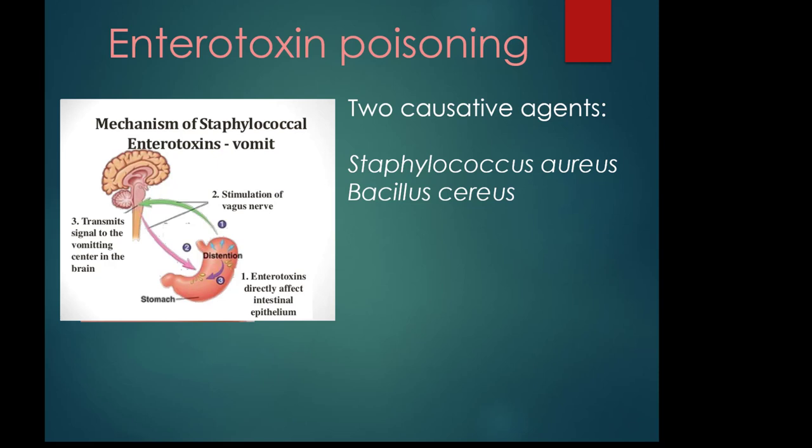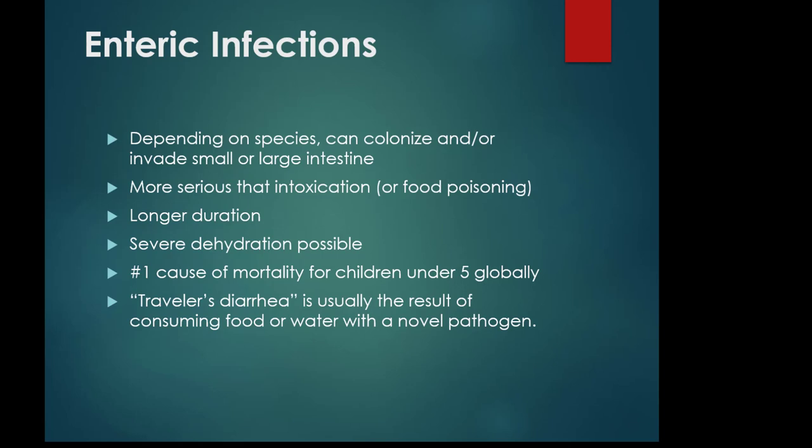You can prevent the toxin from being shed onto your food by: one, making sure you don't contaminate your food with Staphylococcus aureus or Bacillus cereus; and two, if you do contaminate your food, at least keeping the numbers low by keeping food refrigerated. A lot of cases of enterotoxic poisoning happen with cold cut meats that have been left out too long at room temperature.